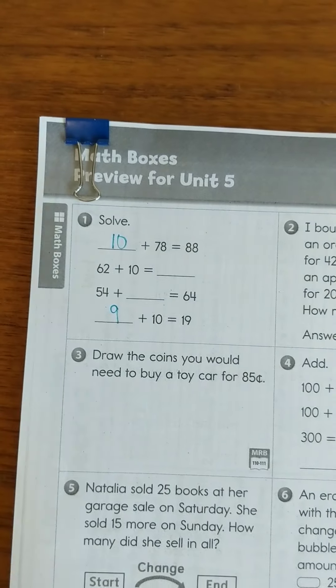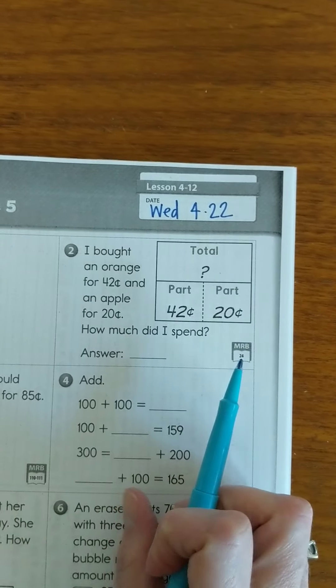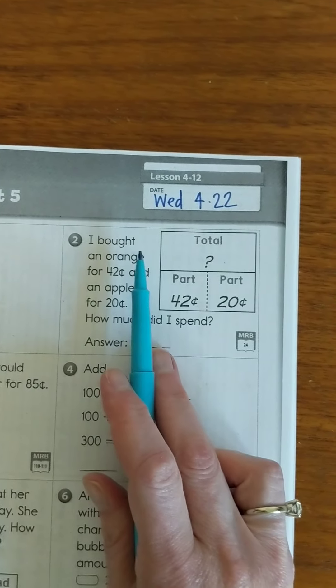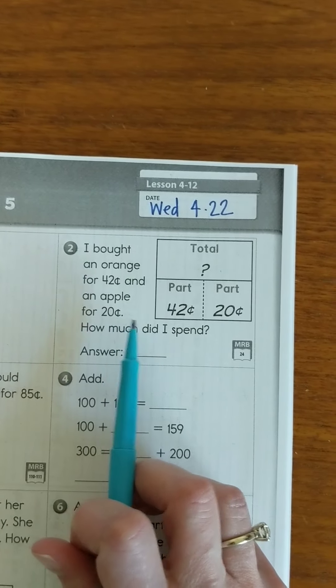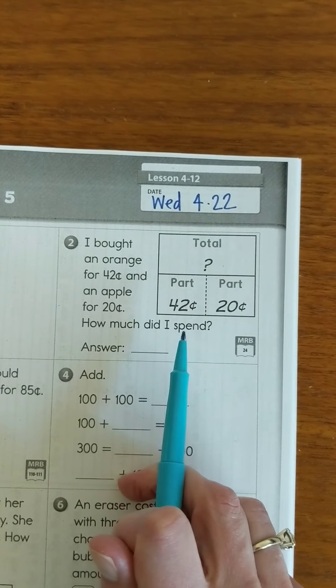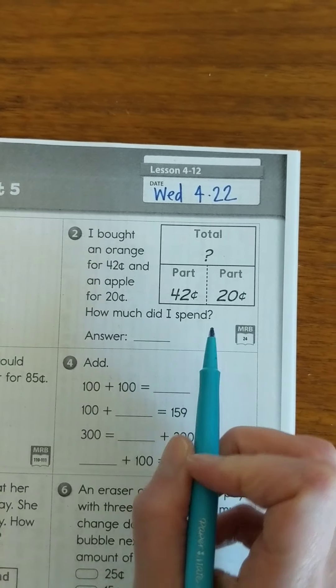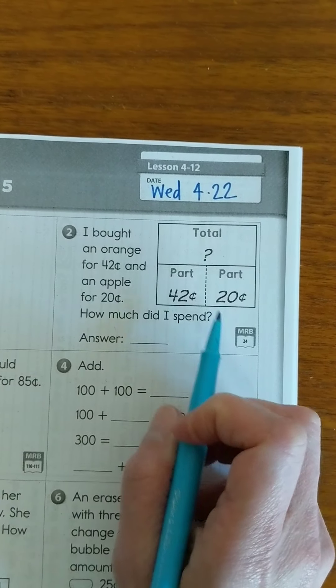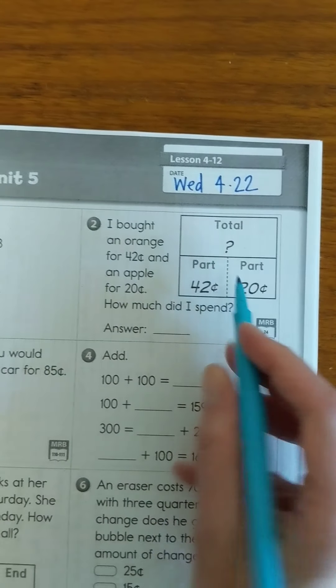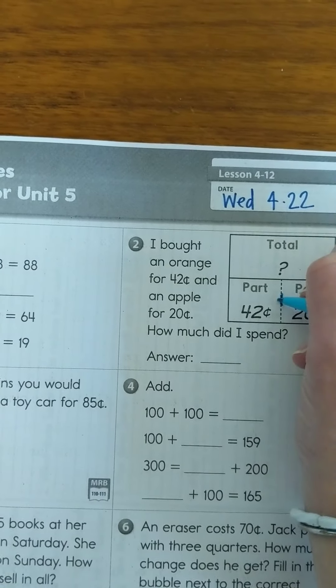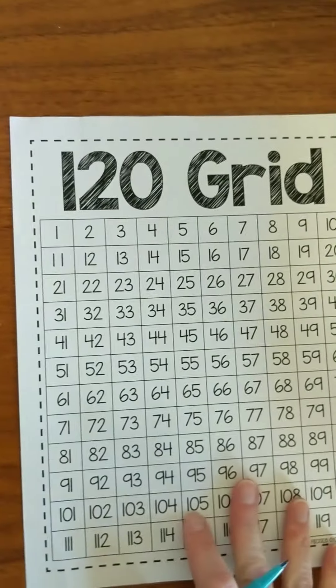Now we have part-part-total. We did this not that long ago. I bought an orange for 42 cents and an apple for 20 cents, how much did I spend? We want to think of it as how much did I spend all together. Part-part-total is a place where we can add a part, have a part, plus add another part, and what is our total. So we are adding these two numbers together.